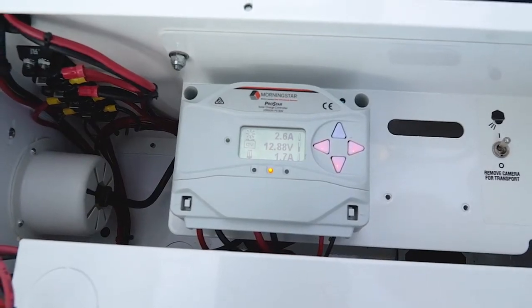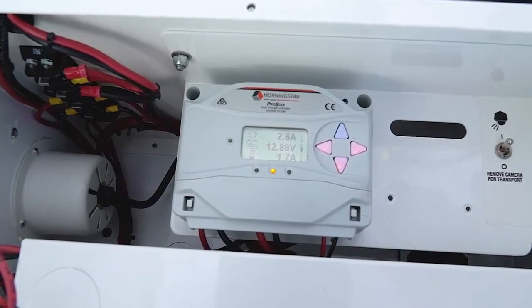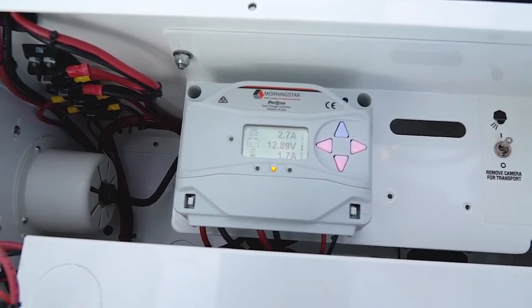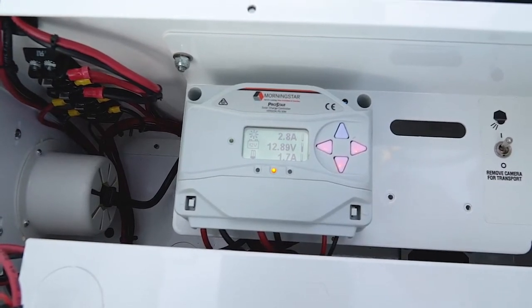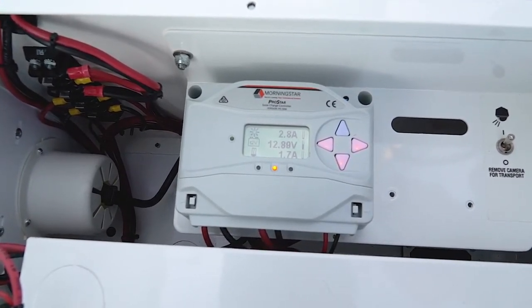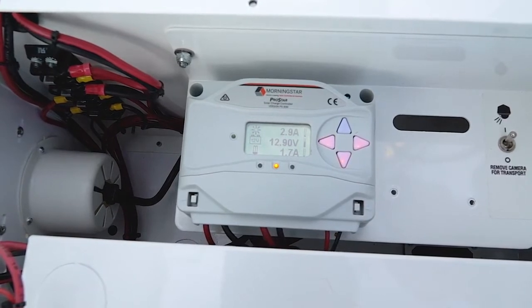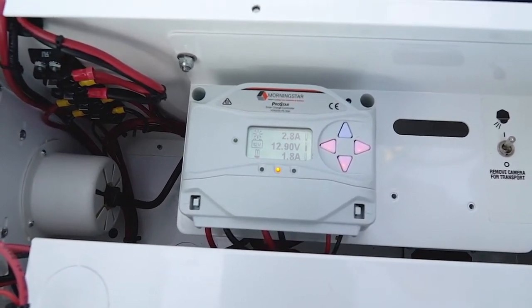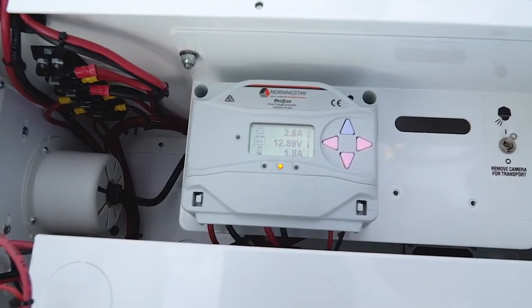On the solar charge controller we have three lines of information that we look at for determining the proper setup of the trailer. The sun symbol is telling us how much power the batteries are taking from the solar panels. The battery at 12 volts shows how much battery voltage we have on the batteries, and the load symbol is our cameras and that's how much power the cameras are drawing.